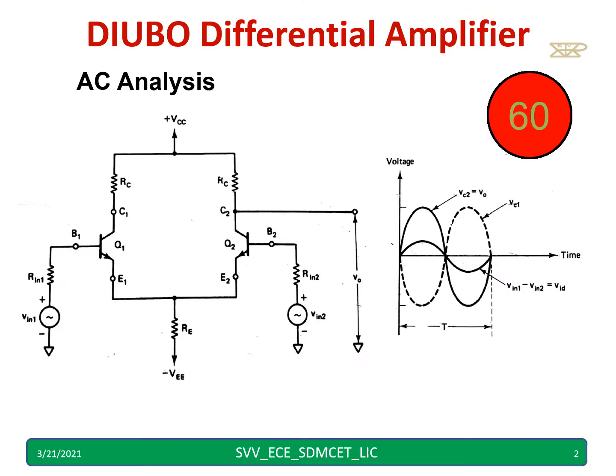You know the dual input, balanced output differential amplifier we have discussed. Now, dual inputs are there - VIN1 and VIN2 I am applying. Unbalanced output, instead of taking output in between C1 and C2, I am taking output between C2 and ground. You can pause the video for a few seconds and you can copy down the circuit diagram as well as the waveforms.